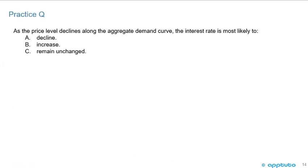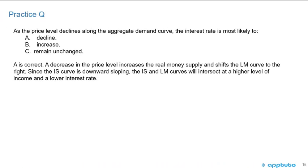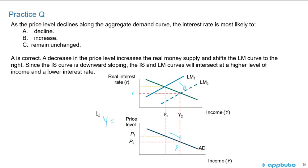One final practice question: as the price level declines along the aggregate demand curve, the interest rate is most likely to — A, decline; B, increase; or C, remain unchanged? A is correct. A decrease in the price level increases the real money supply and shifts the LM curve to the right. Since the IS curve is downward sloping, the IS and LM curves will intersect at a higher level of income and a lower interest rate. As the price level goes lower, you can see the interest rates are going to decrease, because the IS and LM curve are going to intersect at a higher level of income and a lower interest rate. That's the last slide for this LOS.